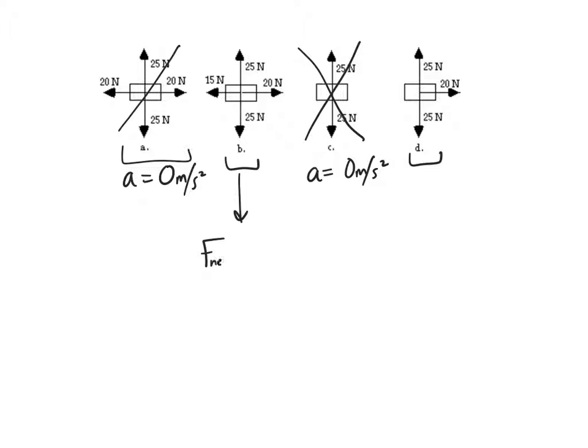Remember that F net, or the total force, is equal to mass times acceleration. So since we have the same mass going on and we're curious about what acceleration is going to be, the one that has the greatest net force is going to be the one that has the biggest acceleration. So let's go look at that.